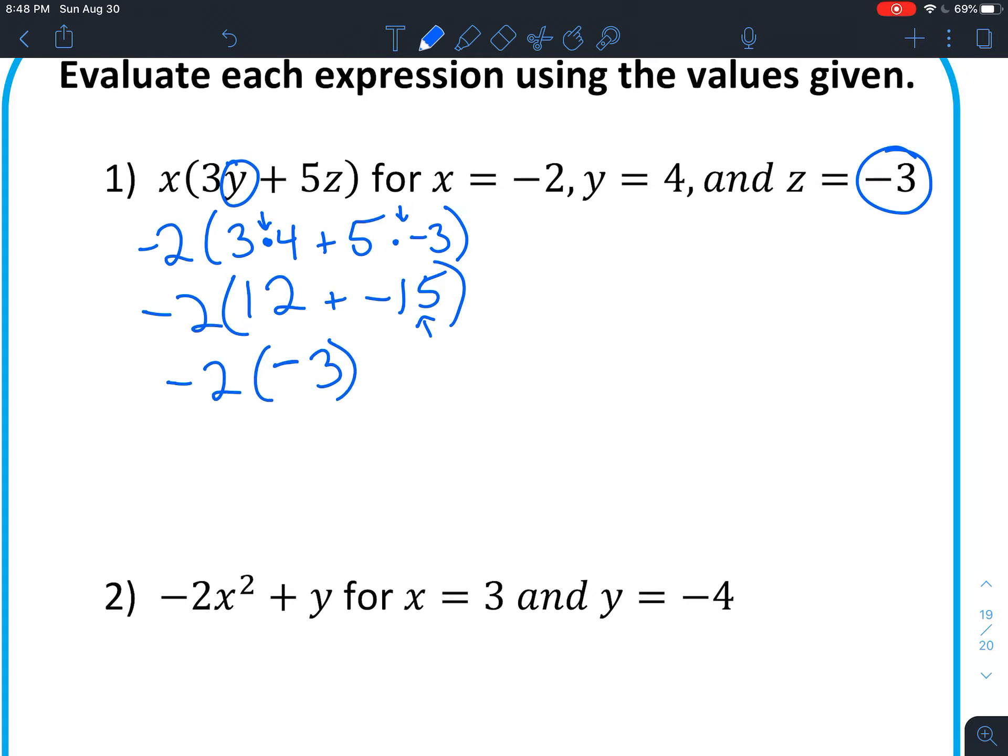And just remember that when we have a number right outside parentheses, that means multiplication. So negative 2 times negative 3 is positive 6. And now that complicated looking expression is all figured out.